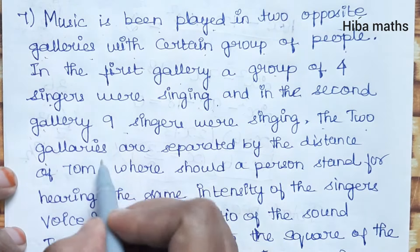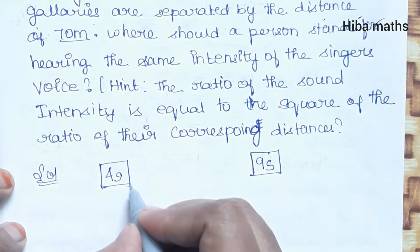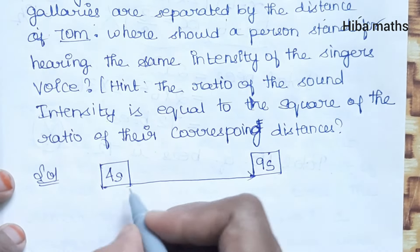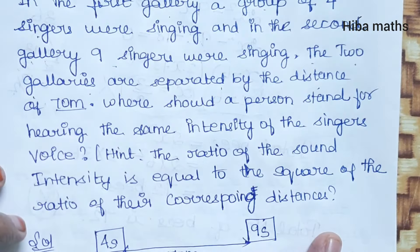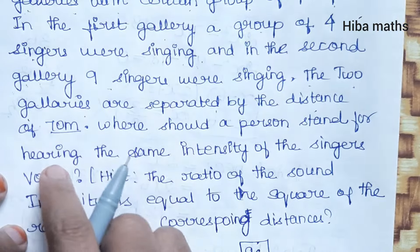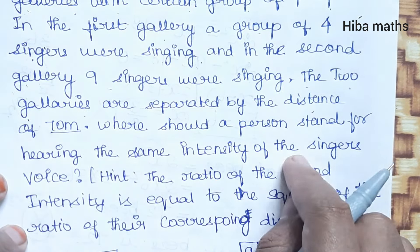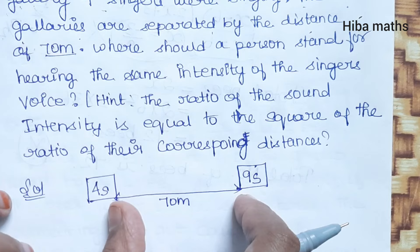The two galleries are separated by a distance of 70 meters. Where should a person stand to hear the same intensity of the singers' voices? In this 70-meter distance, where should the person stand?